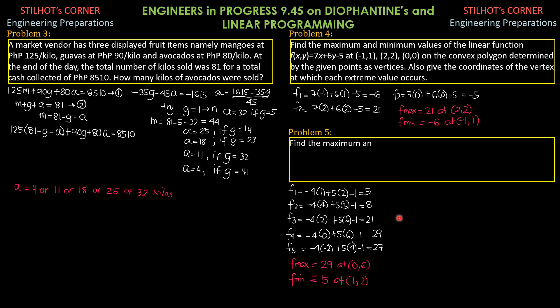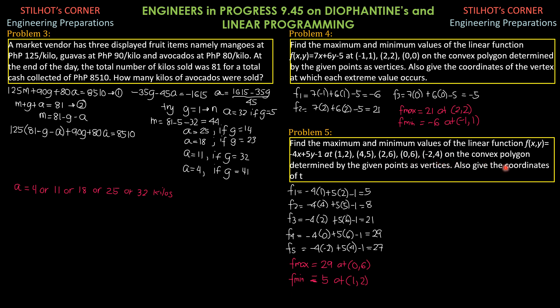Problem 5. Find the maximum and minimum values of the linear function F of XY equals negative 4X plus 5Y minus 1 at 1 comma 2, 4 comma 5, 2 comma 6, 0 comma 6, negative 2 comma 4 on the convex polygon determined by the points as vertices. Also, give the coordinates of the vertices at which each extreme value occurs.